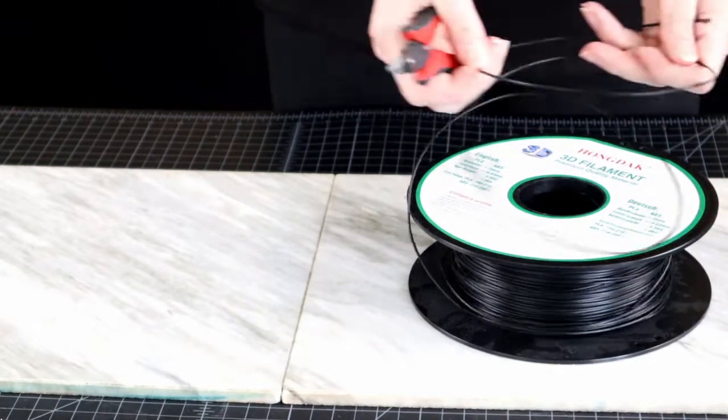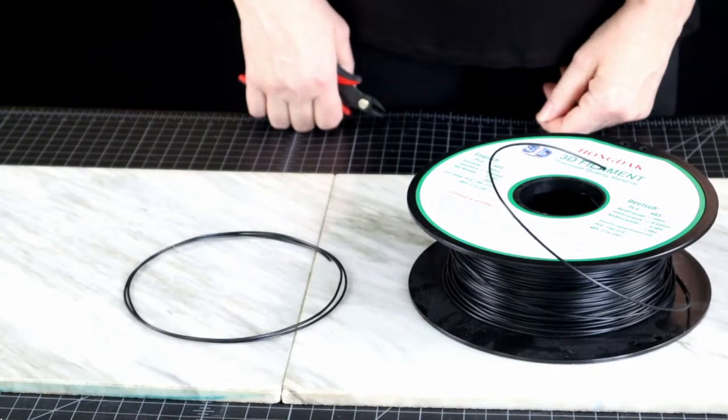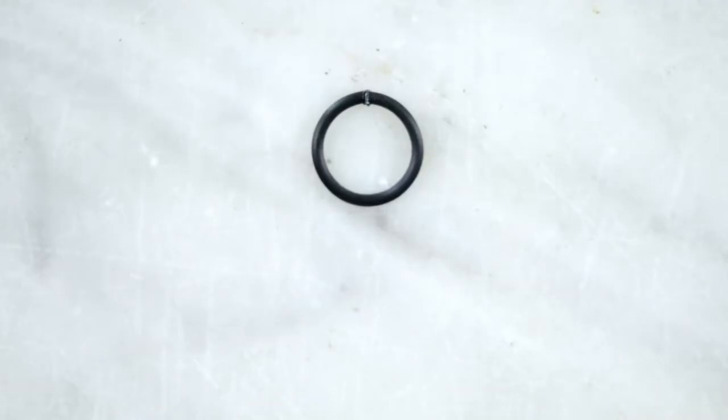When you cut a piece of filament, it will retain the curve of the spool. We just need to tell it to remember a way smaller curve. And guess what?